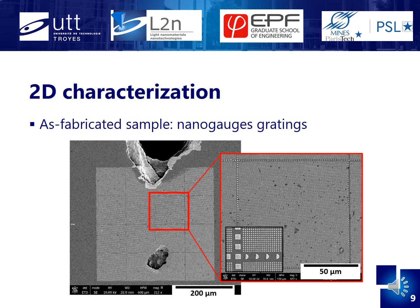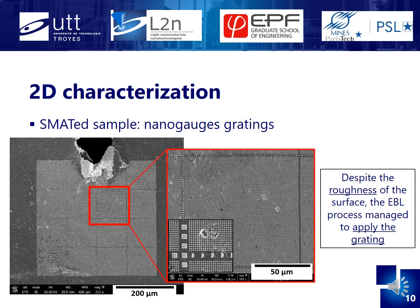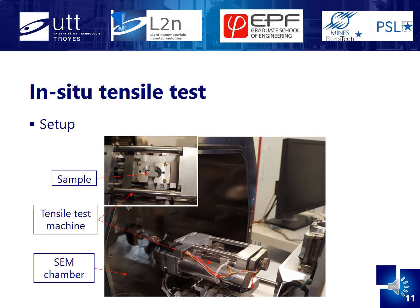The previous design was applied to the as-fabricated sample and the SMAT-ted sample, and both show satisfying results concerning the quality of the deposition, despite the roughness implied by the mechanical treatment for the SMAT-ted sample. For the in-situ tensile test, the samples were placed into a tensile test machine in the SEM chamber. Due to the delay for taking one image, the test has to be stopped every 125 N in order to capture the whole grating, then each subgrating, to have a good following of the crack evolutions until the failure of the sample.